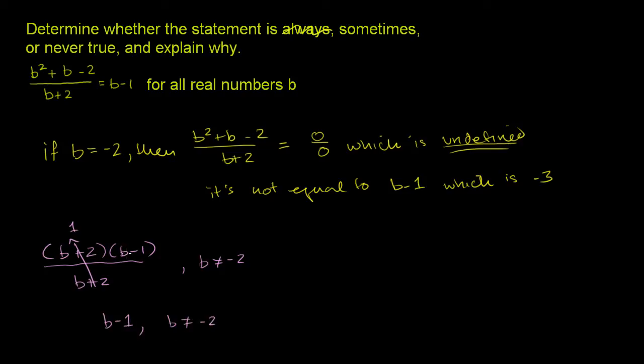So if you assume that b is not equal to negative 2, this thing over here does indeed equal b minus 1. So it is true for all of the other real numbers except for negative 2. So this is sometimes true. It's true every time except for the case where b is equal to negative 2.